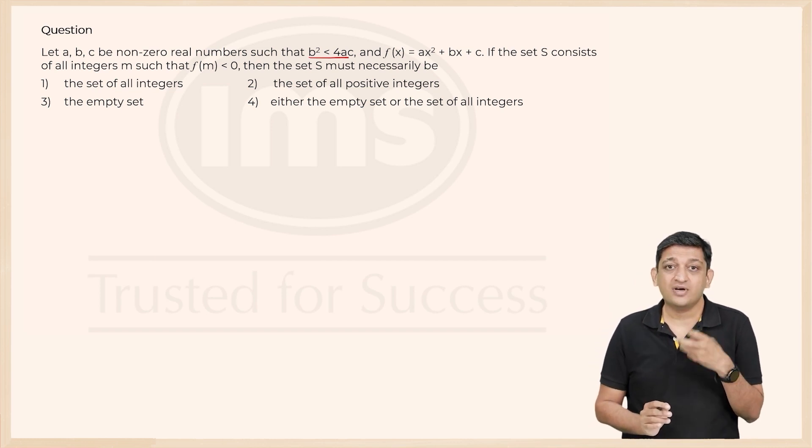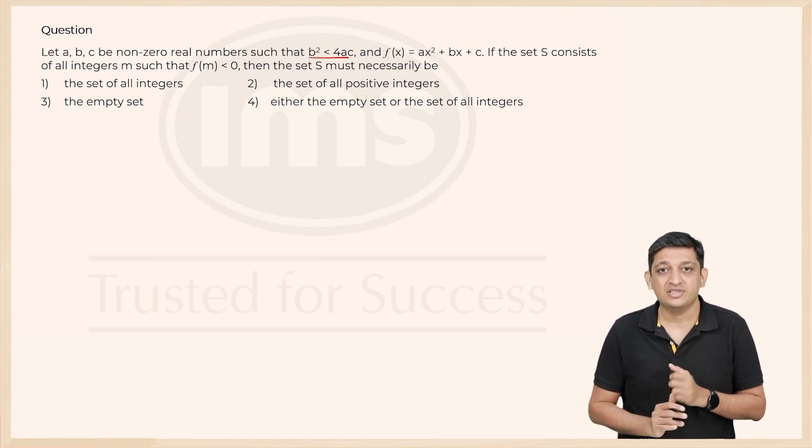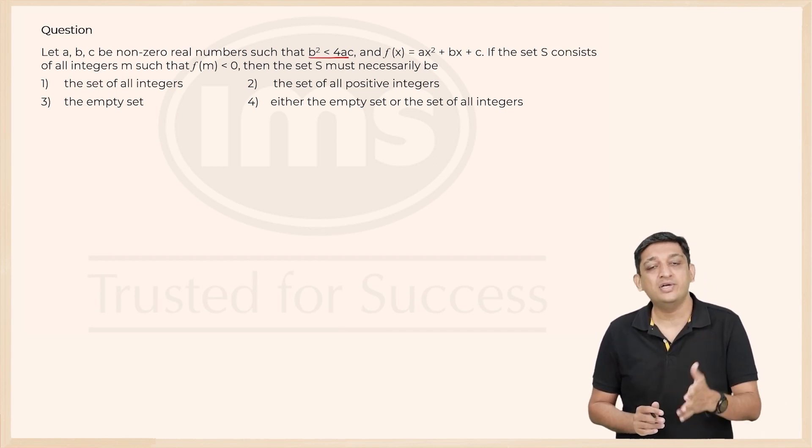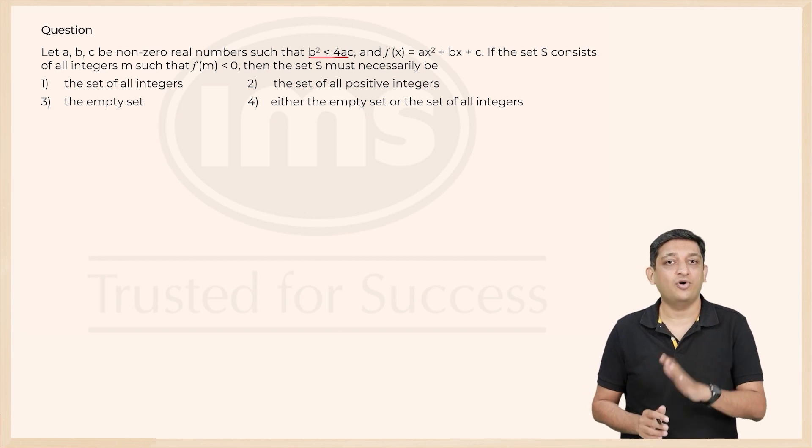Now whenever you have complex roots to a particular equation, what does it mean? It basically means that this quadratic equation is not going to intersect the x-axis at all.